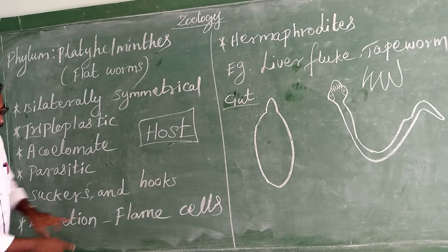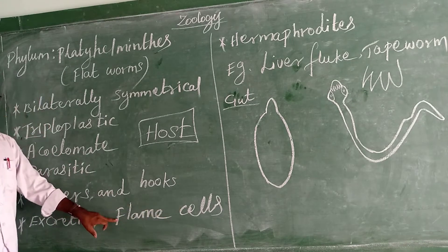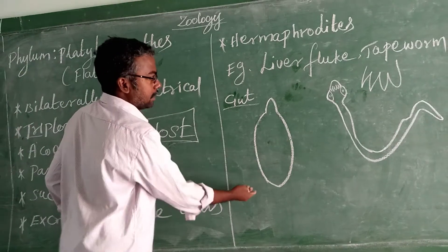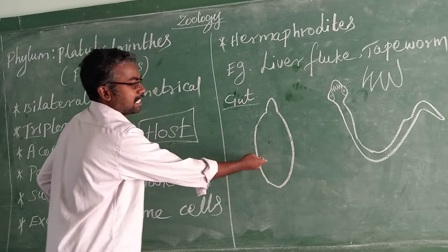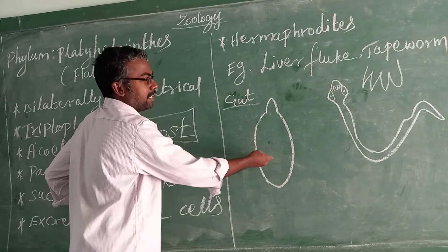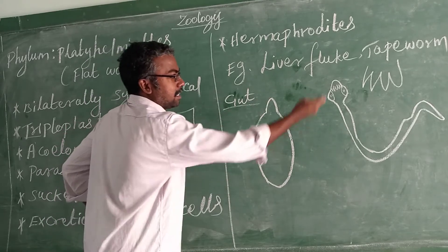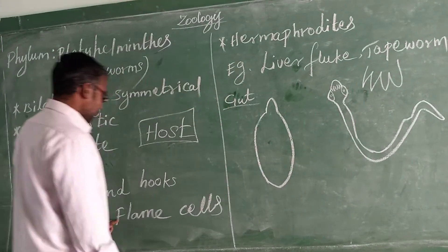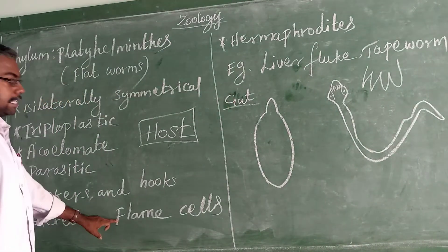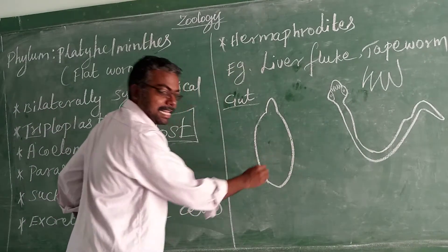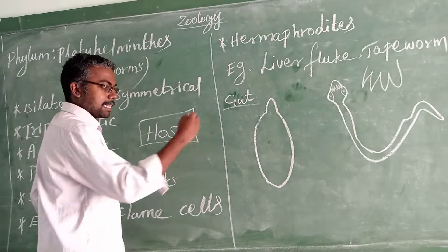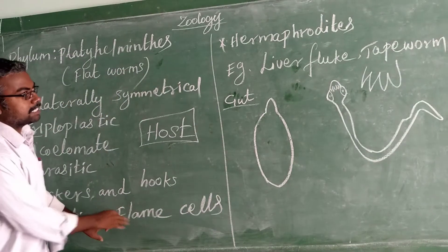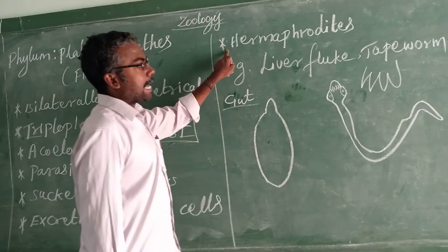Excretion occurs through flame cells. We have kidneys, but in these organisms excretion is carried out by flame cells — specialized cells. For example, the liver fluke lives in the liver, and the tapeworm lives in the small intestine. With the help of flame cells, they excrete waste.